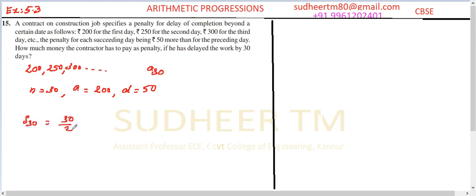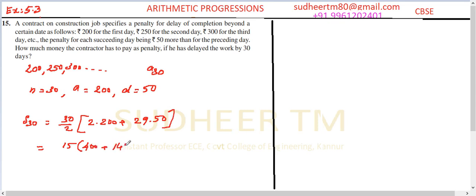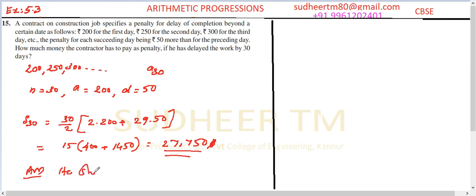S₃₀ is equal to 30 by 2 into 2 into 200 plus (n minus 1) into 50, which is equal to 15 into 400 plus 29 into 50, which equals 27,750. So our answer is the contractor should pay rupees 27,750.